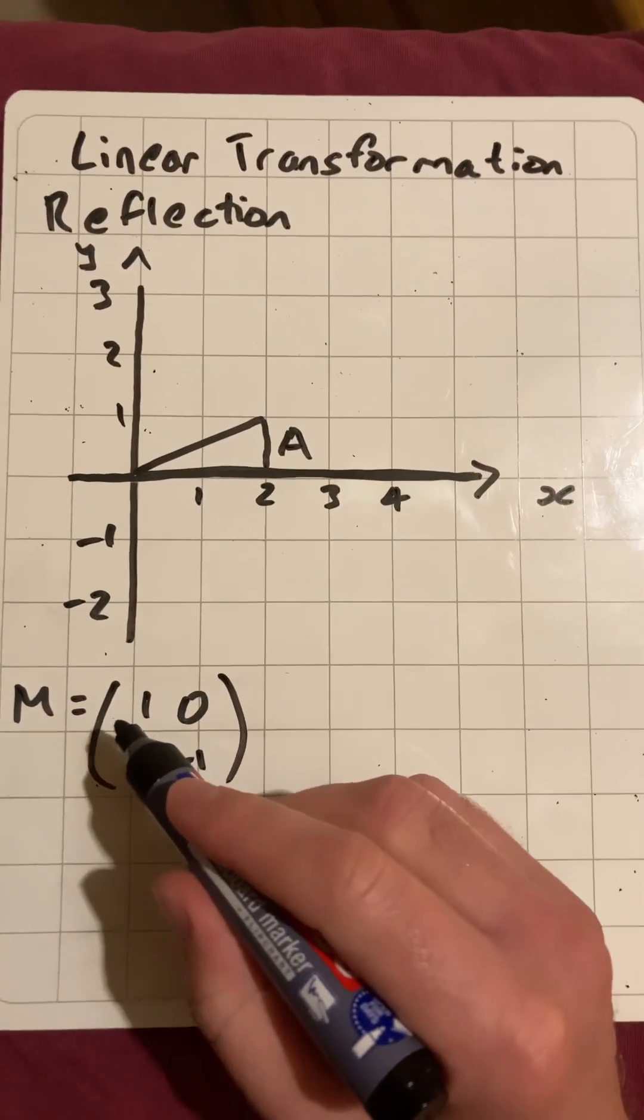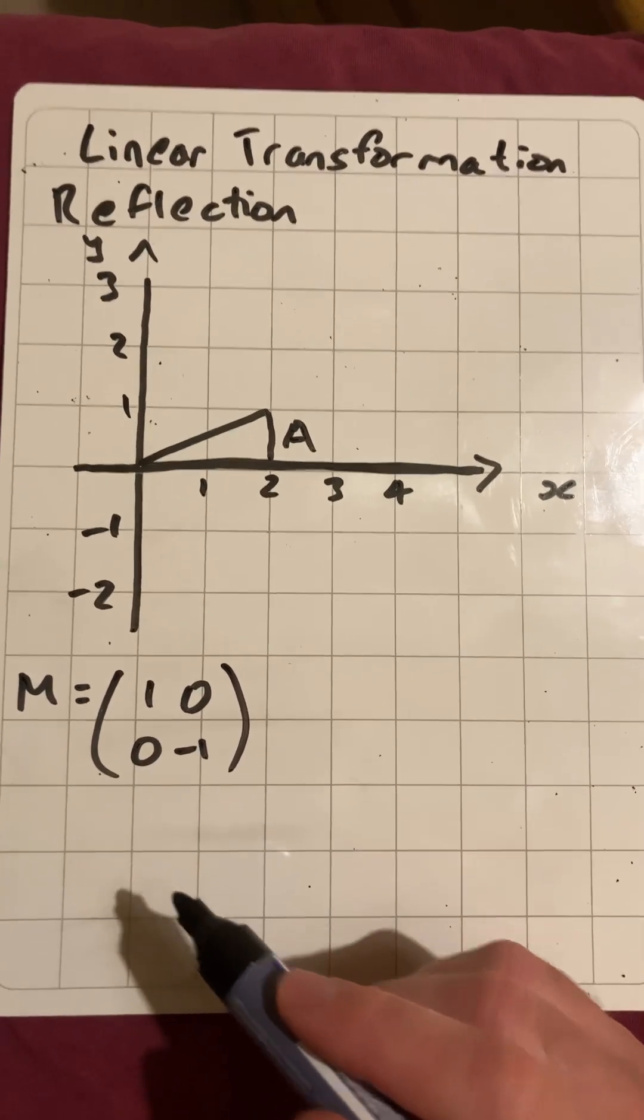And the transformation represented by the matrix M, 1, 0, 0, minus 1, is going to act upon it.